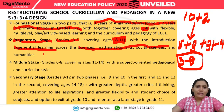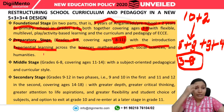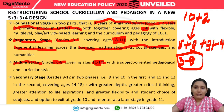Experiential learning means learning by doing. The next stage is the middle stage, from grade 6 to 8, covering the age group of 11 to 14 years. Here, a subject-oriented curriculum will be introduced.